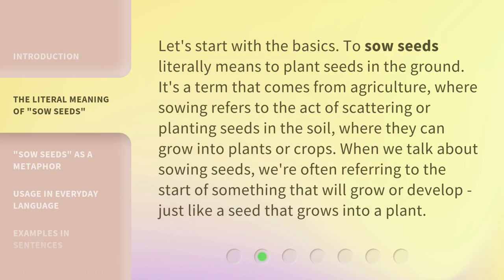Let's start with the basics. To sow seeds literally means to plant seeds in the ground. It's a term that comes from agriculture, where sowing refers to the act of scattering or planting seeds in the soil, where they can grow into plants or crops. When we talk about sowing seeds, we're often referring to the start of something that will grow or develop, just like a seed that grows into a plant.